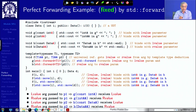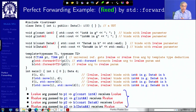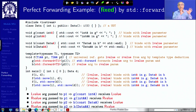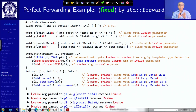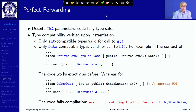With this, you can get exactly the behavior you wanted. That is the basic solution to the forwarding problem. Just as in move semantics we could achieve move with the help of std::move, here we can achieve perfect forwarding with std::forward — a very simple solution.